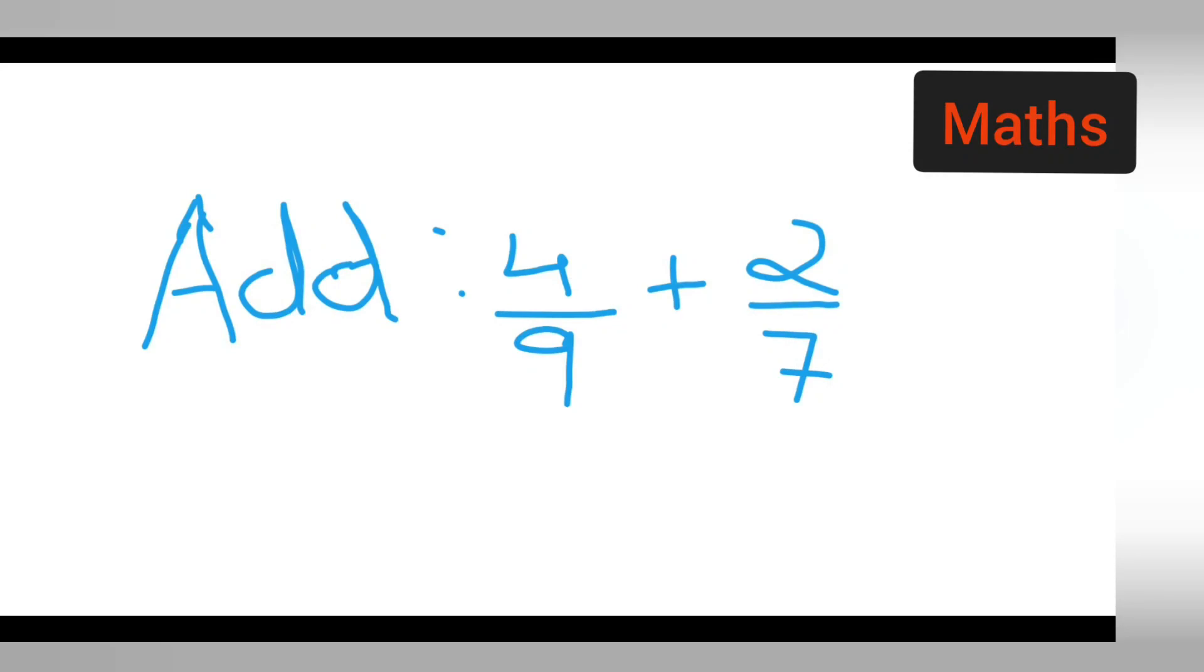In today's class of mathematics, today's question is taken from class 6th or 7th mathematics. We are going to add 4 upon 9 plus 2 upon 7 when we have two different denominators. What happens when there are two different denominators? Let us see that.